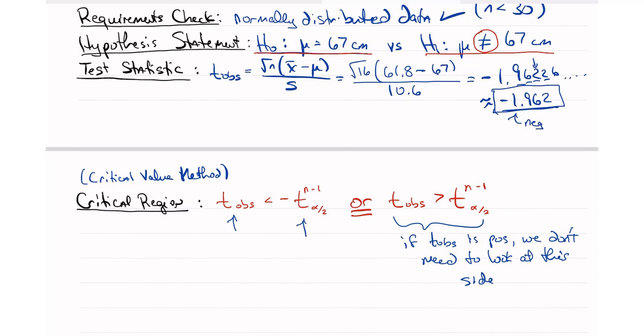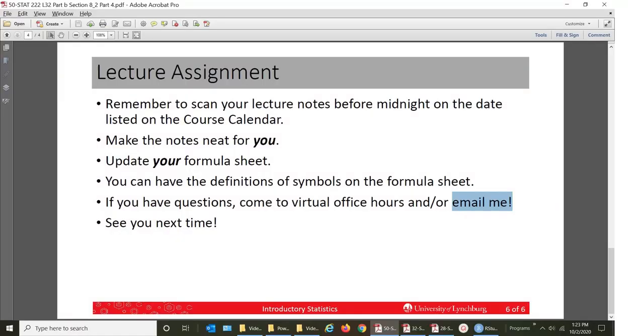Well, I know t observed. It's a negative 1.962. So, now I need to find this value and I need to be careful with the signs here. You'll notice that this is a less than and this one is a greater than. So, we need to be careful. Make sure you get it right. Copy it down exactly. Well, that's the end of this video.